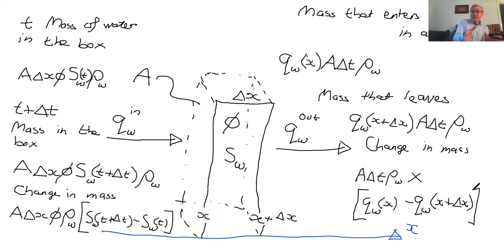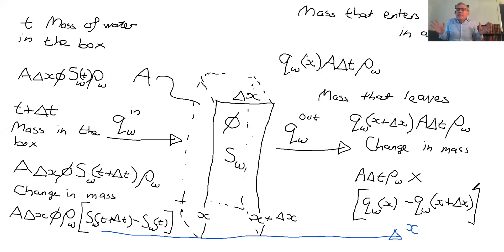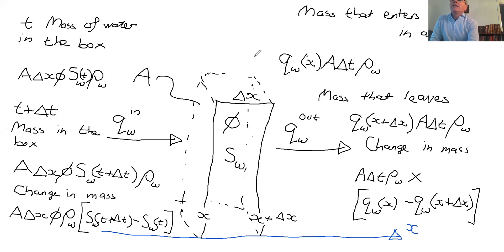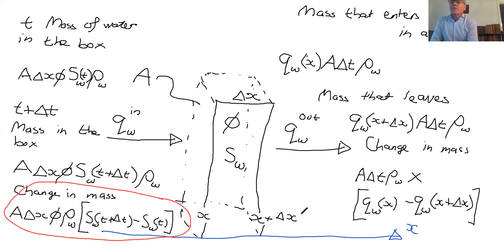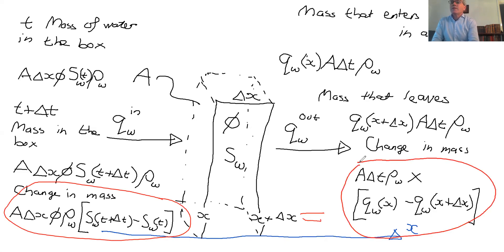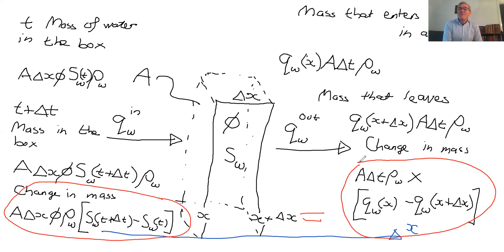We've got the change in mass in the box in a time delta t, and we've got the mass flowing in and out. Conservation of mass is perfectly straightforward: mass is conserved, so the change in mass equals the net mass flow. Invoking conservation of mass simply means taking the expression for change in mass in the box and setting it equal to the net mass flow in minus out. That is a conservation equation — it really is as simple as that.